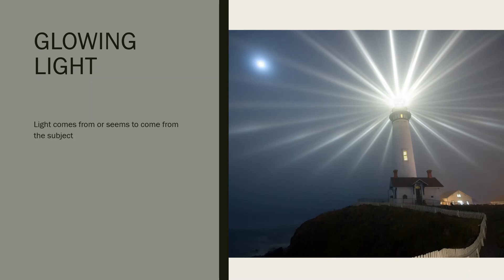Last we have glowing light. This is when the light is the subject itself. In this lighthouse photo there are actually two glows. The first one is obvious — it's the lighthouse. Because the camera is focused on the light of the lighthouse, we see a glow effect throughout the sky and you get a starburst. The second glow is the moon in the top left corner. If you focus on the moon, you'll see that there's a halo around it — the camera has captured the light coming off the moon and shows it in a glowing fashion.